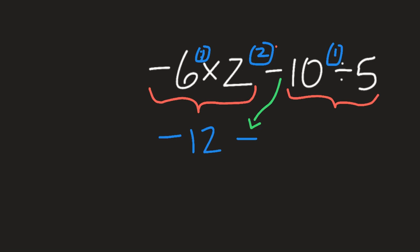10 divided by 5. So 10 divided by 5 is, did I write this correctly? That's fine for now. 10 divided by 5 makes 2. And negative 12 subtract 2. A way to think about this is, you owe $12. So you owe $12.